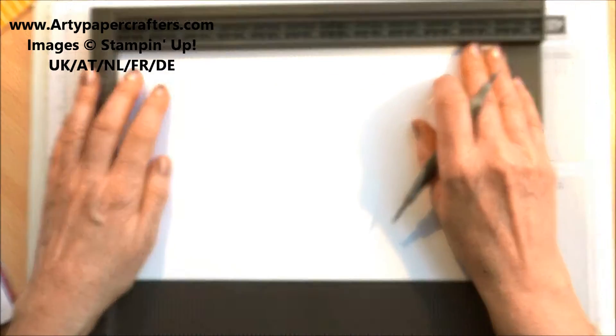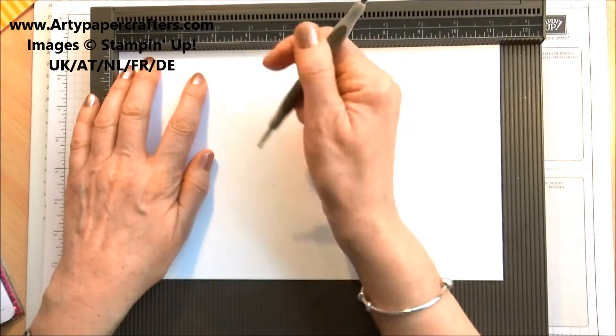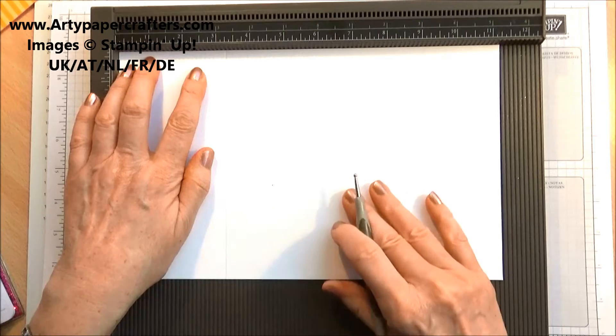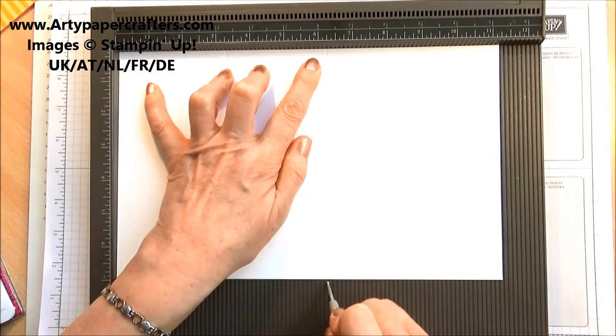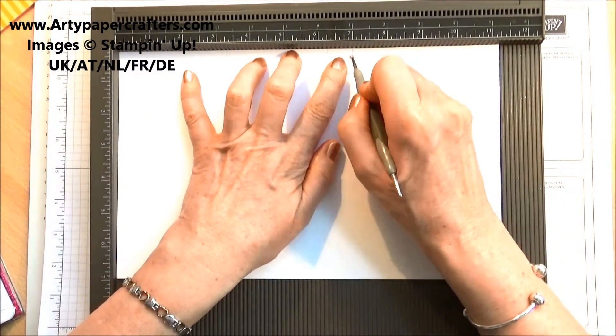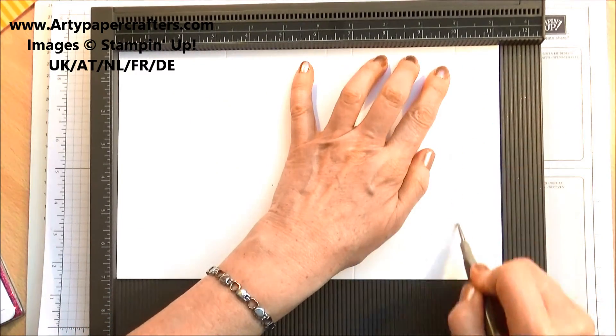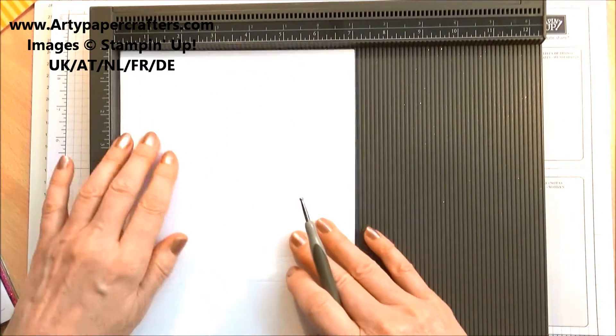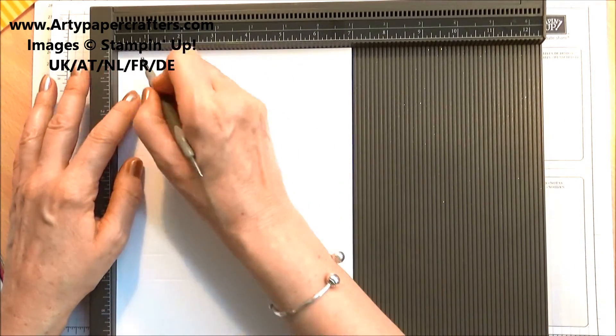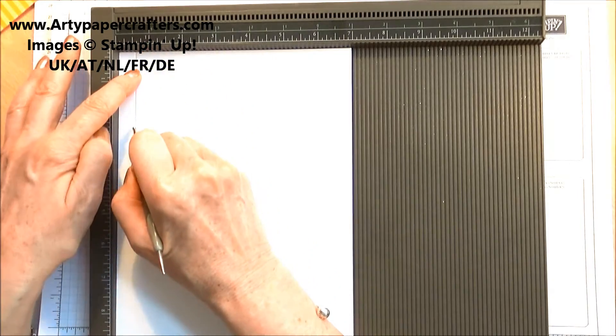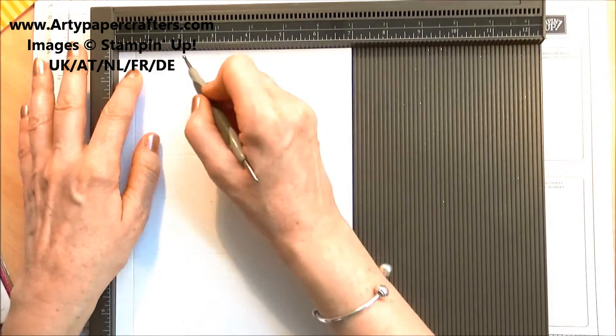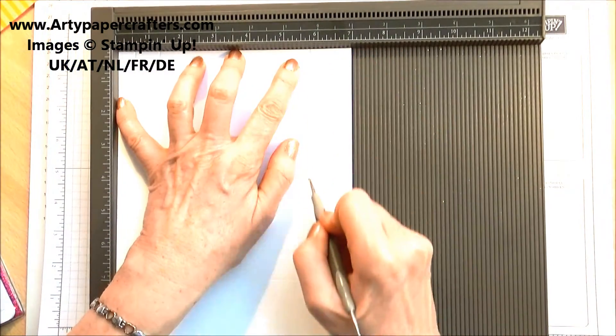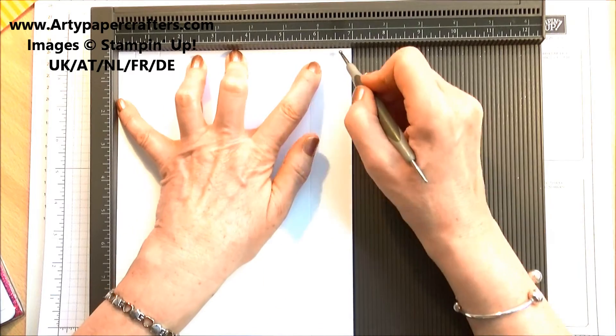Right then, so on the long side we are going to score at three and a quarter, six and a quarter, seven, ten and ten and three quarters. Turn it to the short side and we're going to score it at half an inch, one and a quarter inches, five and three quarter inches and six and a half.